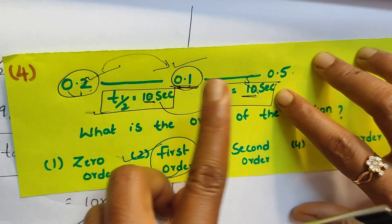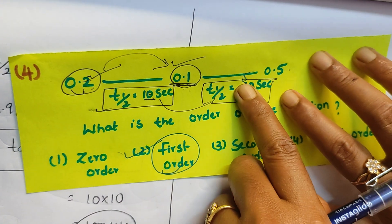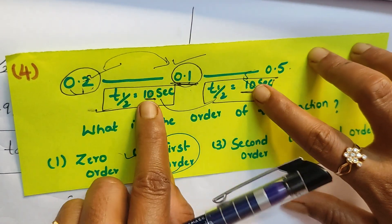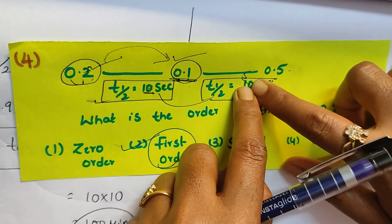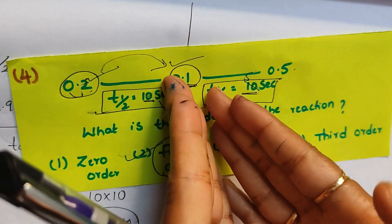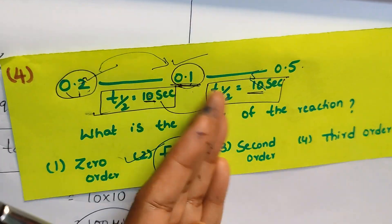If here 10 seconds, and here if they give 20 seconds, initial concentration is becoming half but t half is becoming double, then that is a second order reaction. These are the solutions to the questions which I asked in a previous video.